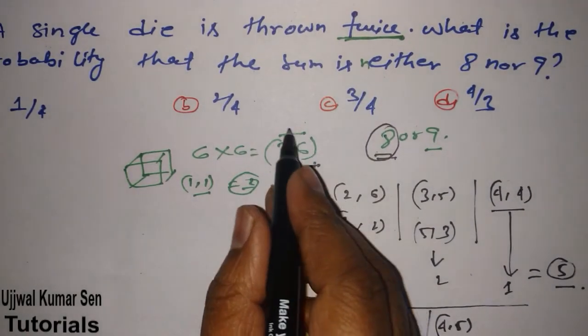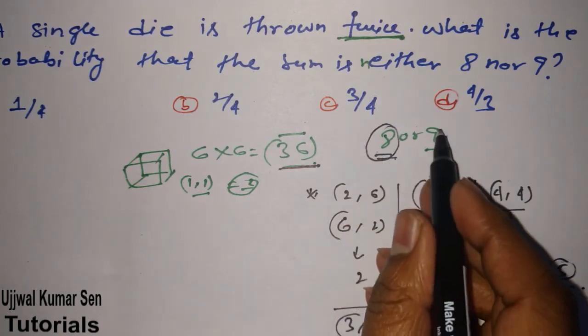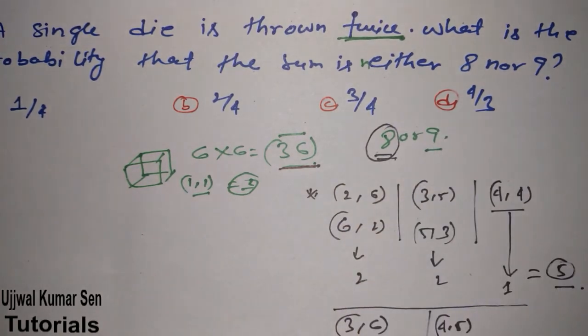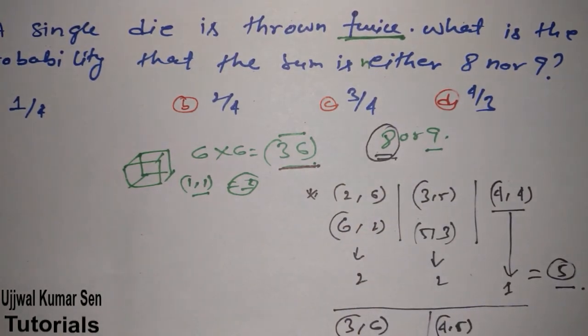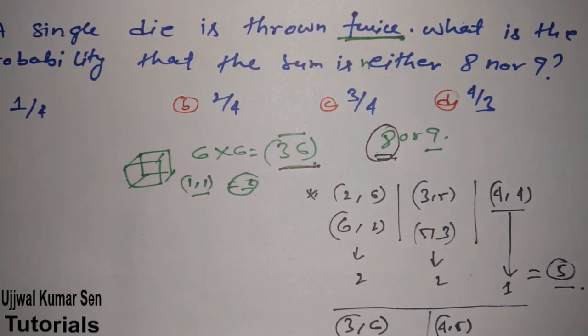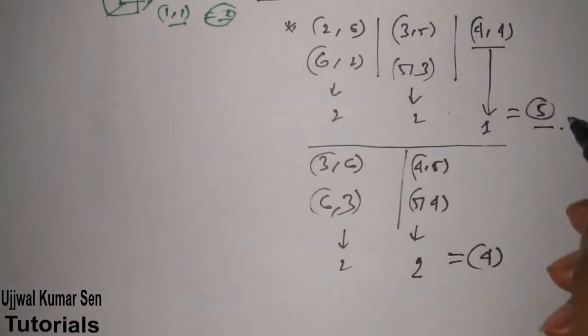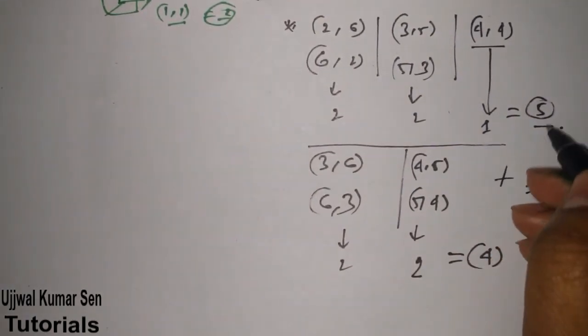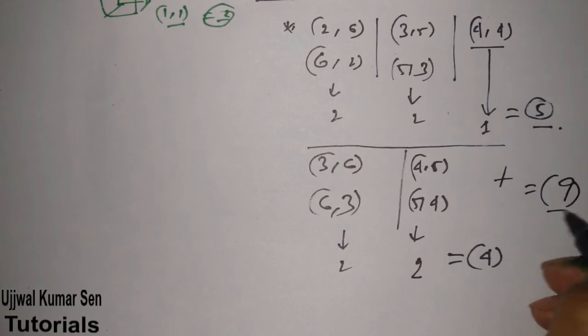Now we could do it that we'll write all 36 possibilities, then we'll choose 8 and 9 sum, but that could be quite lengthy. That's why I'm sharing with you the shortcut for solving this type of question when you don't have any other methods to implement. So total number of possibilities according to this question is 5 plus 4 is 9.